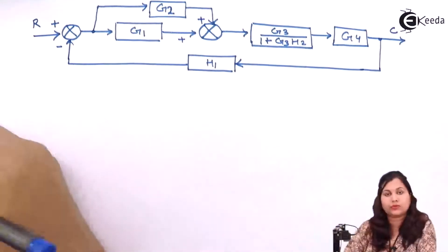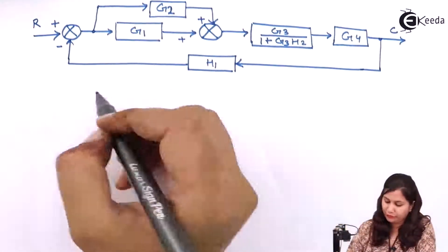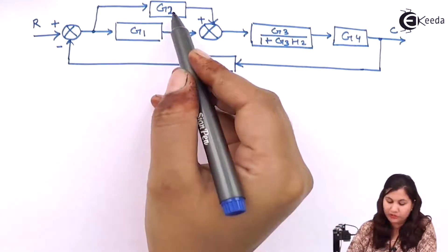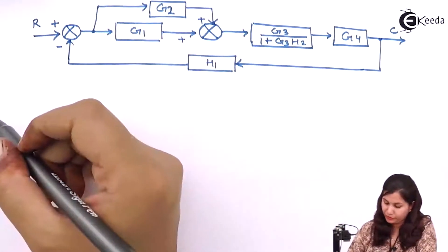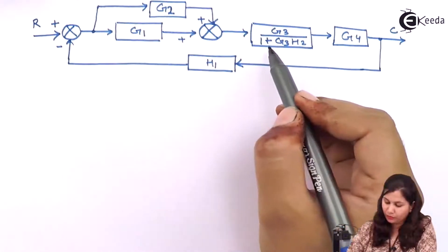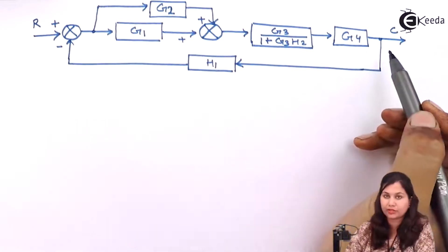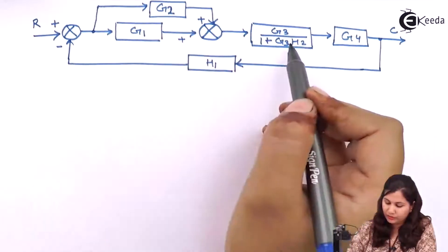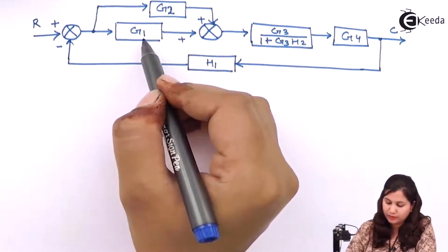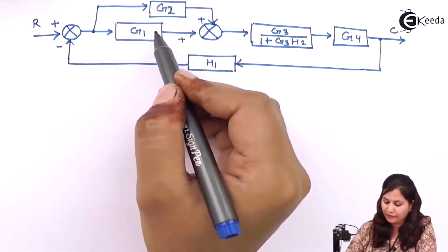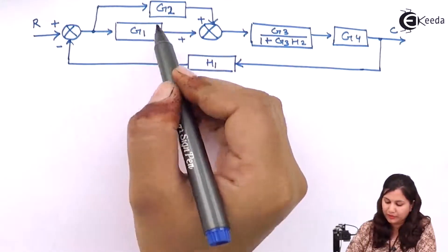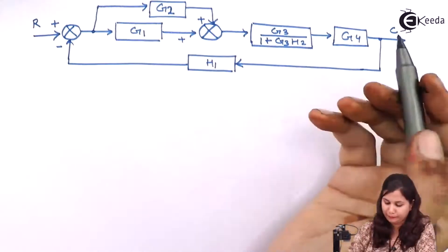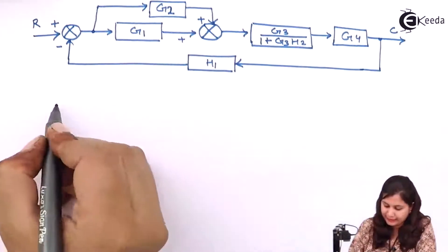This is what we have done. Now you can see that these two blocks G1 and G2 are in parallel combination, and G3 upon 1 plus G3H2 and G4 are in series. So we can replace these two parallel blocks with a single block having transfer function G1 plus G2, and these two series transfer functions will be multiplied. Let's apply this.